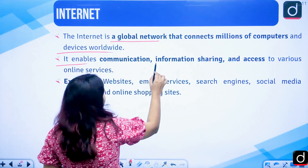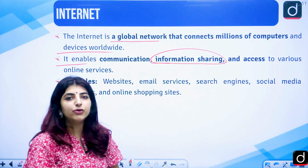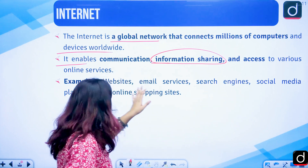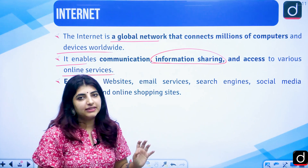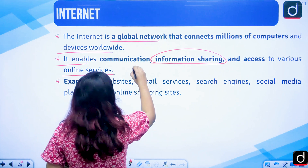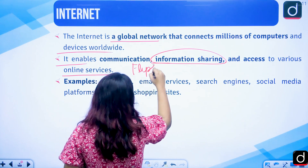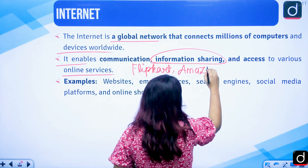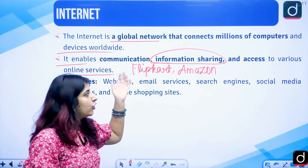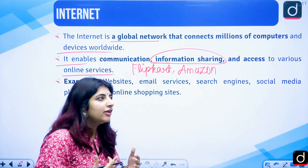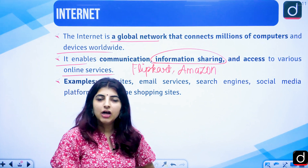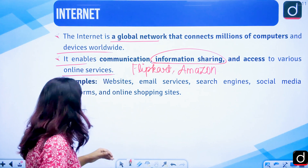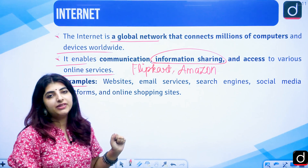Internet enables communication, information sharing — like sharing photographs and documents — and access to various online services like Flipkart, Amazon, Myntra to buy things. There are also e-government portals which have been initiated by the Government of India and are really crucial. Examples are websites like Google, email services where you can send email from your home to your office or to any person anywhere in the world.